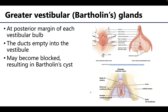Lastly, let's discuss the greater vestibular glands, sometimes referred to as Bartholin's glands. These are located near the posterior margin of each vestibular bulb and near the vaginal orifice. Each of the ducts of the gland empties into the vestibule, and the secretions, which occur during sexual arousal, are a clear whitish mucus-type secretion. If a duct or the opening of the duct becomes blocked, this may result in a Bartholin's cyst.